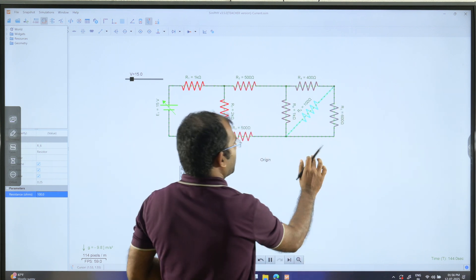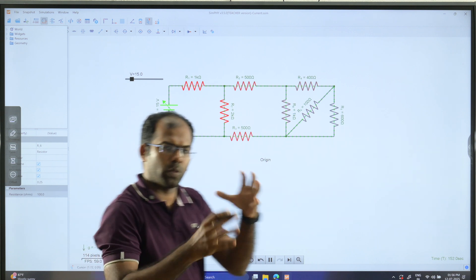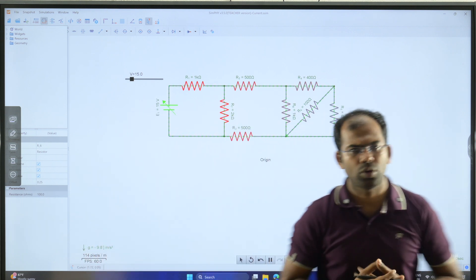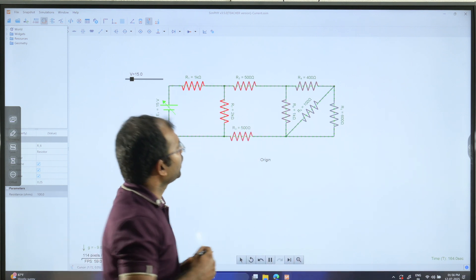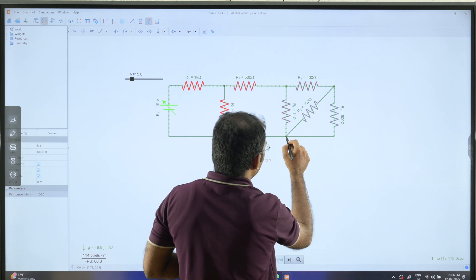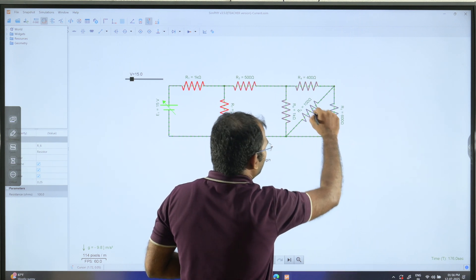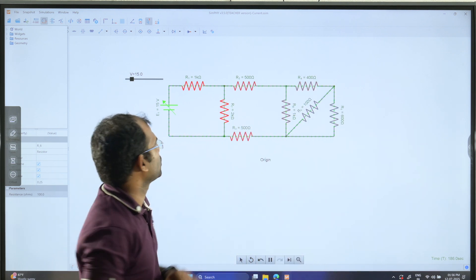Whenever we increase resistance, it restricts the flow of charge. In this case, these two are in parallel, whereas this is in series with these two.